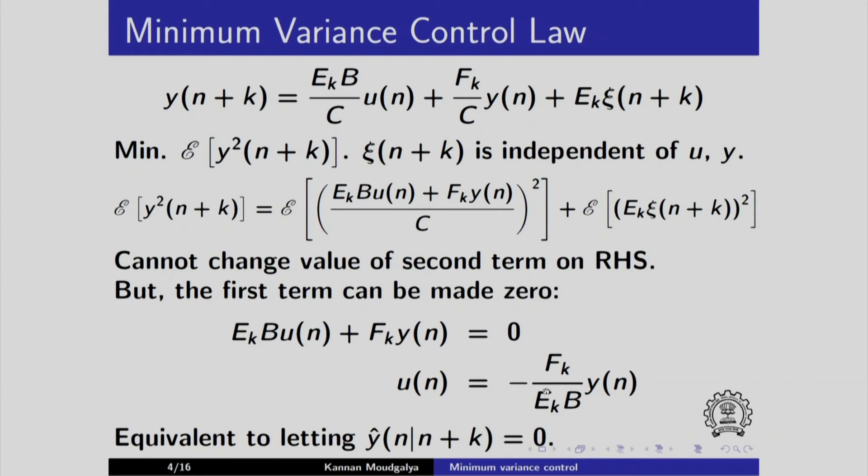This is equivalent to letting y hat of n plus k equals 0. If this is the case, why did I do all this? It will become clear in a subsequent lecture. We let these two terms go to 0 and arrive at the control law.